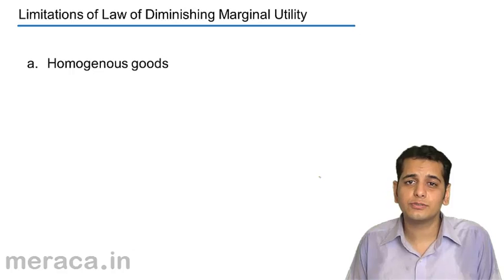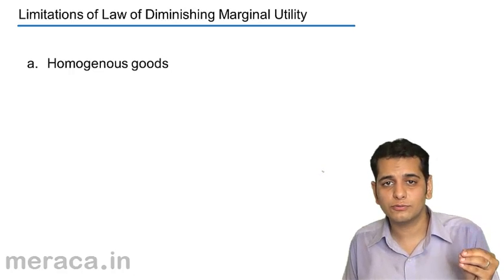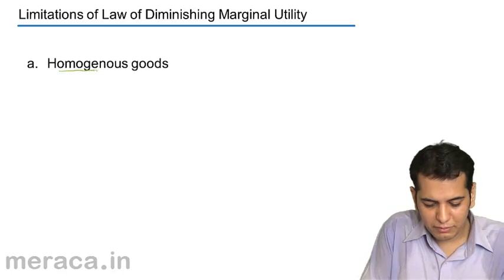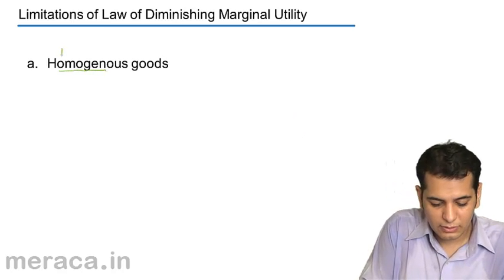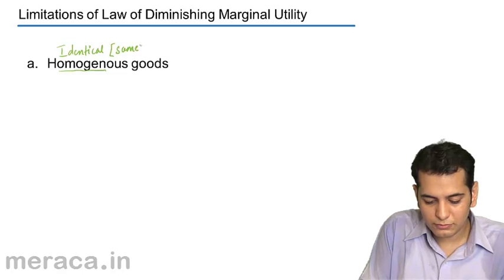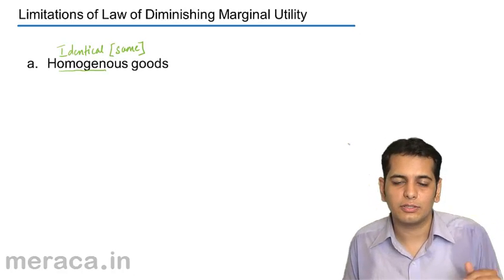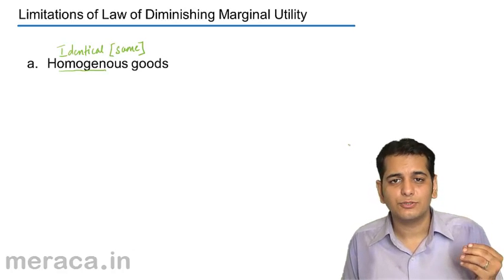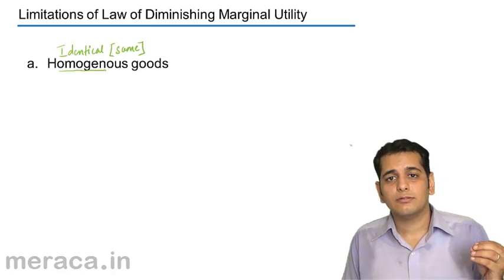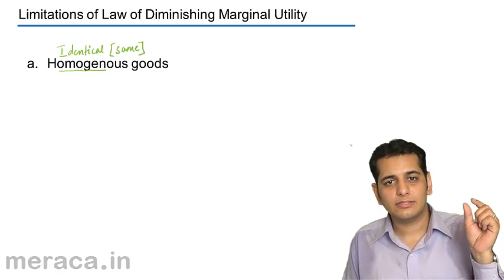First: homogeneous goods. For the law of diminishing marginal utility to operate, it is important that the goods which are consumed are homogeneous in nature. Homogeneous goods means identical goods or same goods. For example, if you are consuming chocolates, you should go on consuming the same chocolate. When we apply the law of diminishing marginal utility, it is imperative that the same product is consumed.